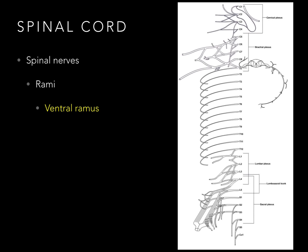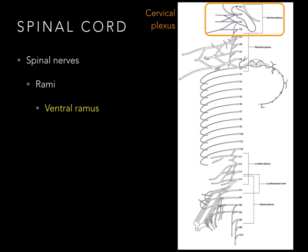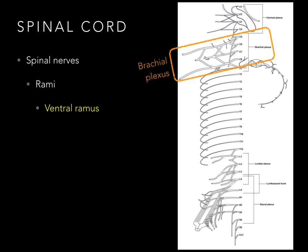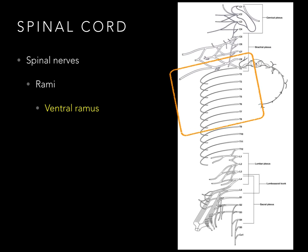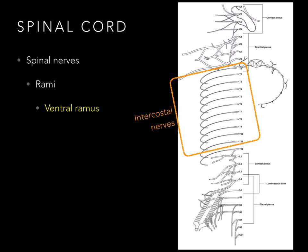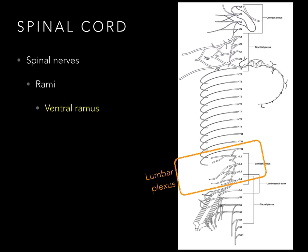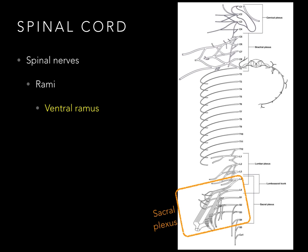The ventral rami are what we pretty much focus on throughout the course, with the exception of week one when we focus on the back. Each spinal cord level — cervical, thoracic, lumbar, sacral, and coccygeal — has a ventral ramus. These ventral rami often form plexuses: the cervical plexus going to the body wall muscles of the neck, the brachial plexus going to the muscles and skin of the upper limb, intercostal nerves coursing below the ribs to intercostal muscles and overlying skin, the lumbar plexus serving part of the body wall and lower limb, and the sacral plexus going to the lower limb.